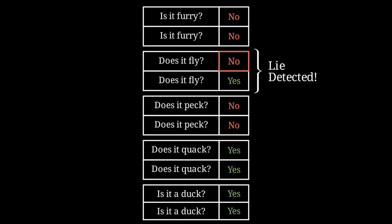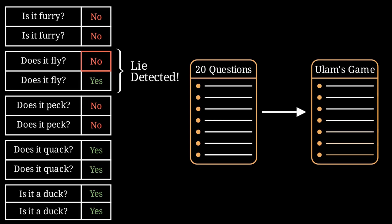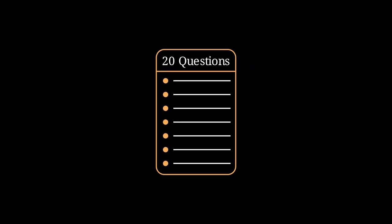In this case, considering only the question duplication strategy allows us to completely disregard the possibility of a lie. If we can find the best strategy for a regular game of 20 questions, we know we can construct from it an approximation of the best strategy for Ulam's game. Now that we know we're looking for the best 20 questions strategy, we have to wonder, what exactly makes a strategy the best one?